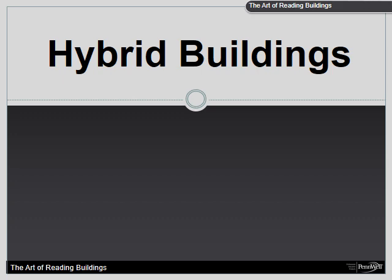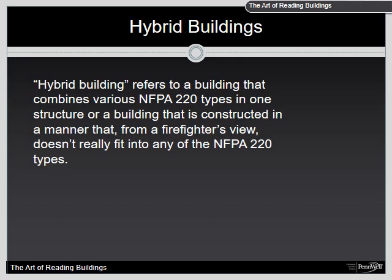In the text, a hybrid building refers to any building that combines various NFPA 220 types in one structure, or a building that is constructed in a manner that from a firefighter's view does not really fit into any of the NFPA 220 types. So again, hybrid is either going to be a mix of the different construction types — one, two, three, four, and five — or something that, from a firefighter's view, you scratch your head and you're really not sure what to call it, and we throw it in the hybrid category.